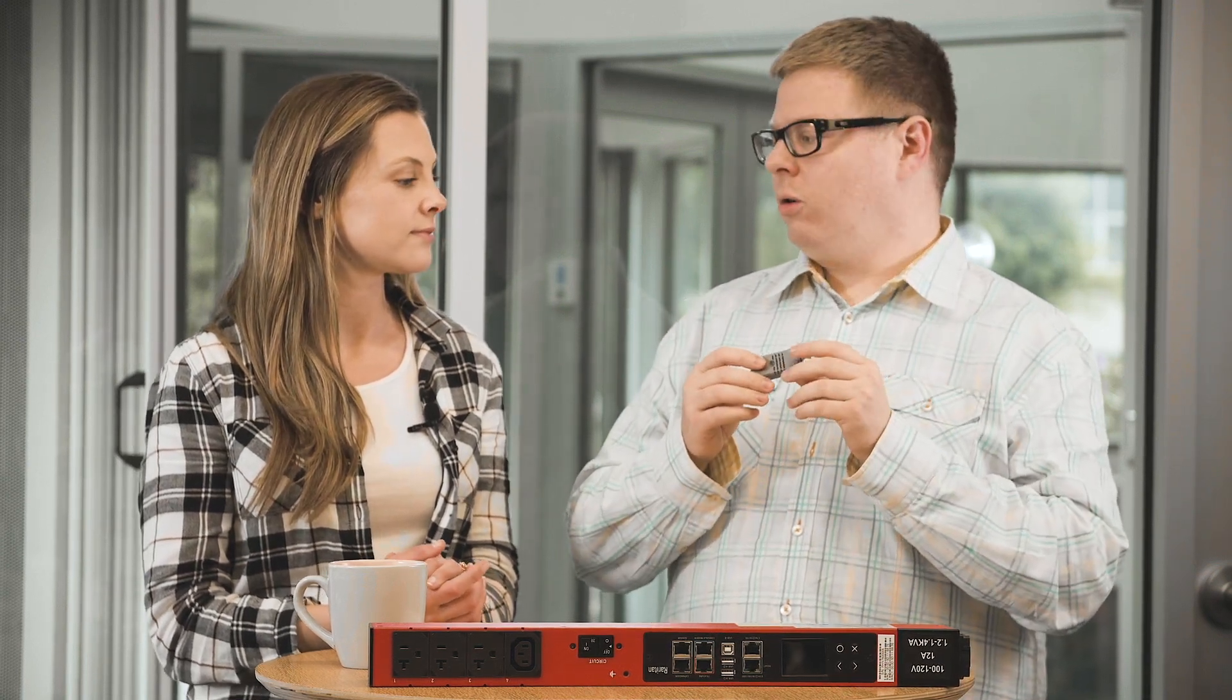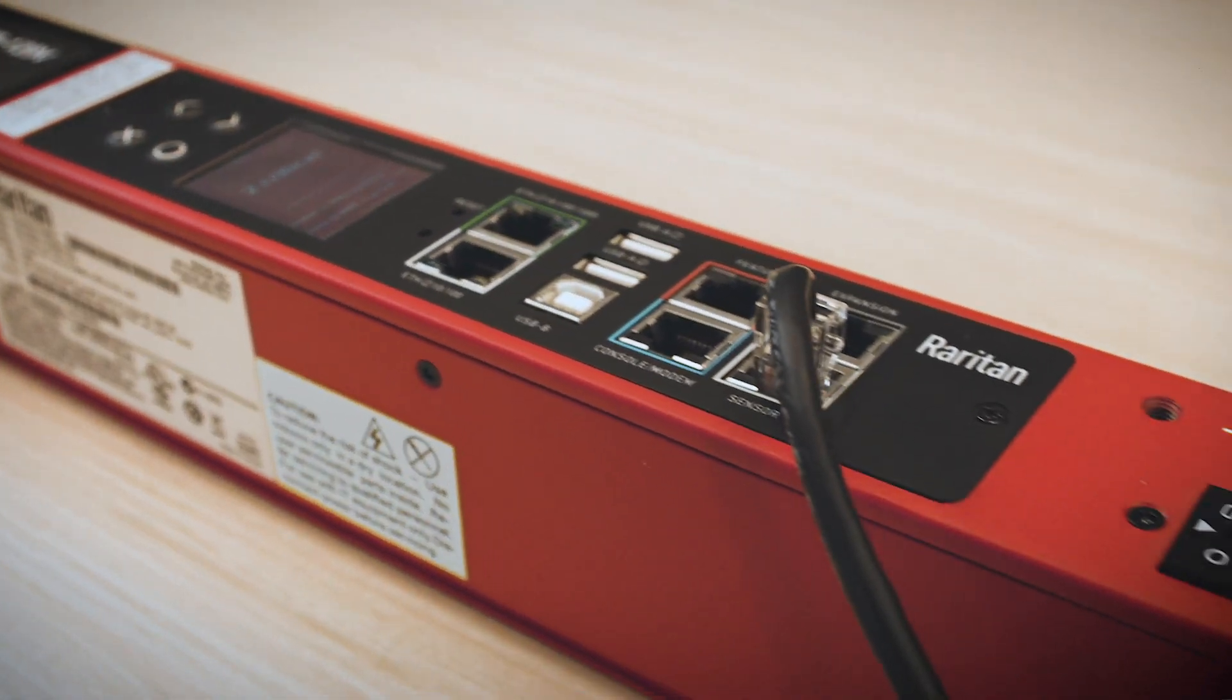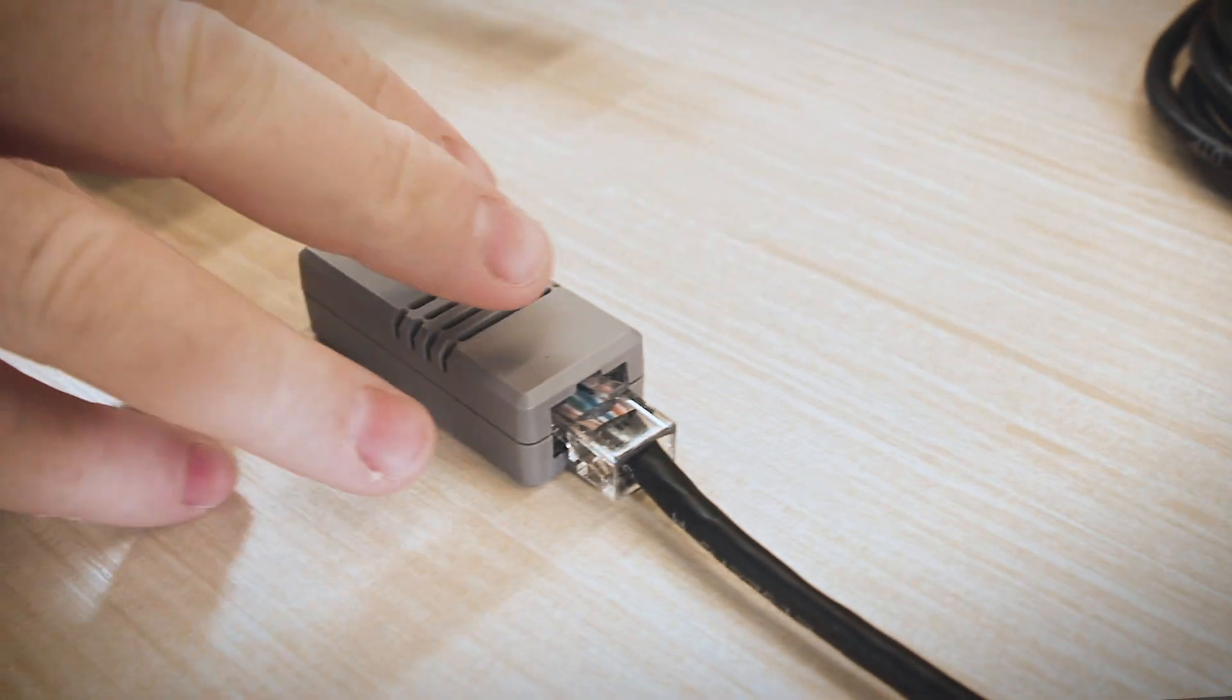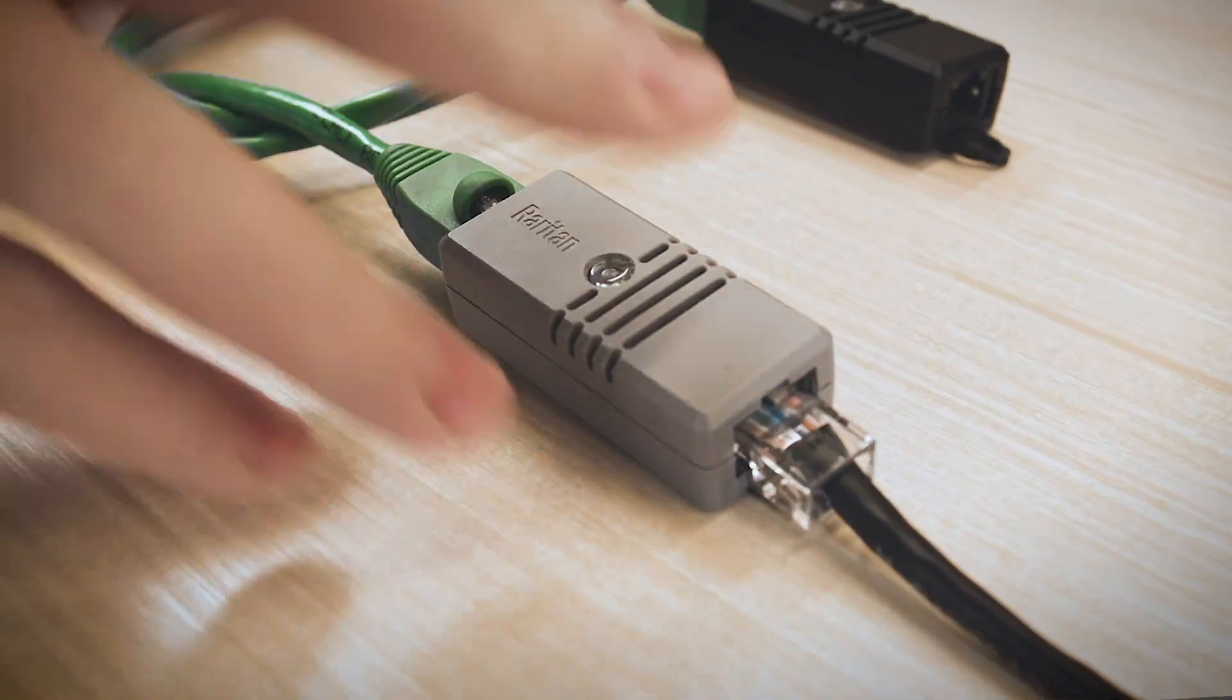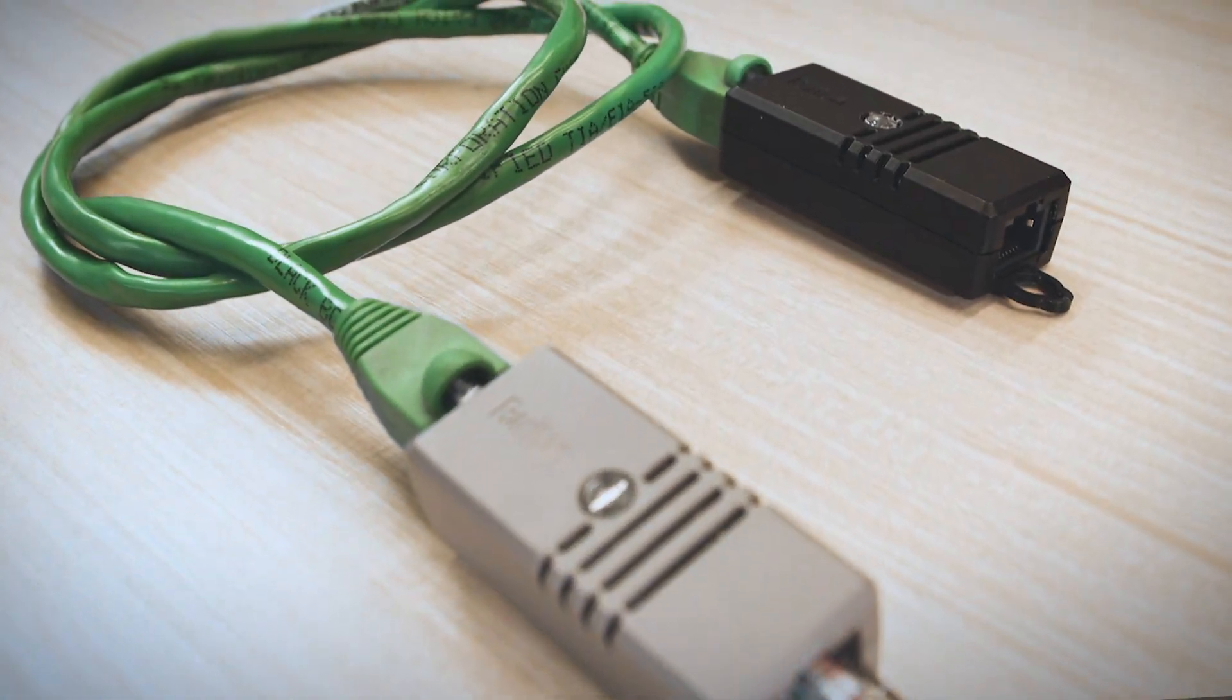Sure thing, Jess. Raritan Smart Sensors offer environmental sensing capabilities in an easy-to-deploy and very small form factor. We have dual RJ45 connectors on each sensor, which allows up to 12 sensor packages to be connected together with simple category cable. Now, we offer a number of different sensors, but our most popular is temperature and humidity.